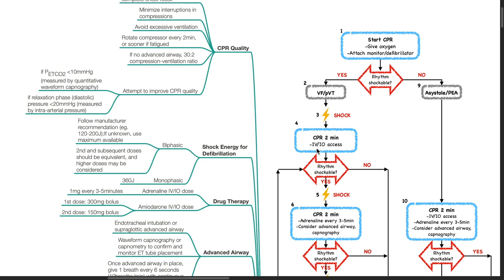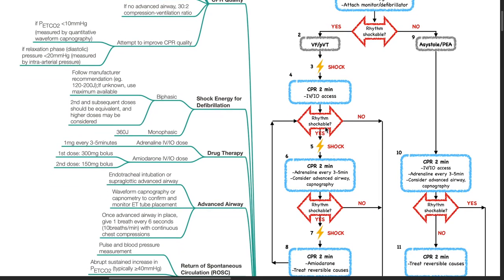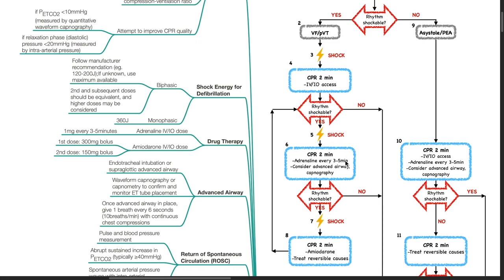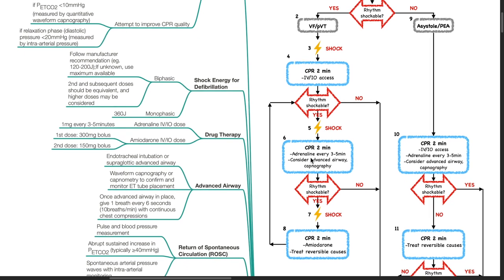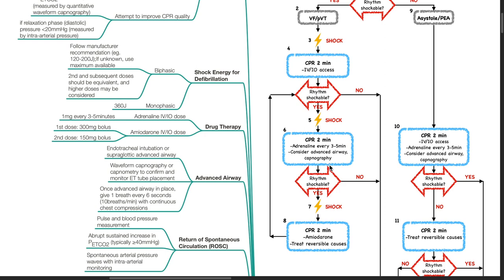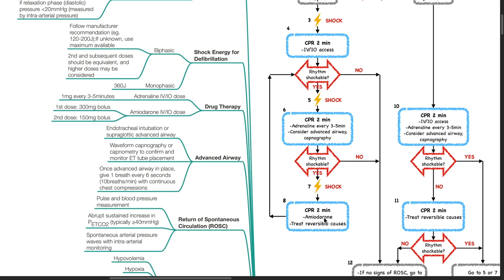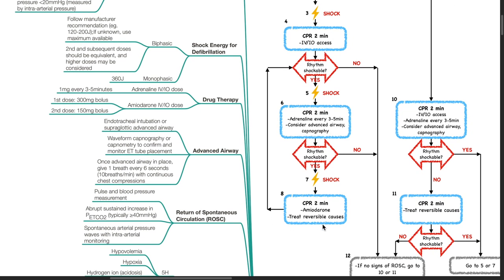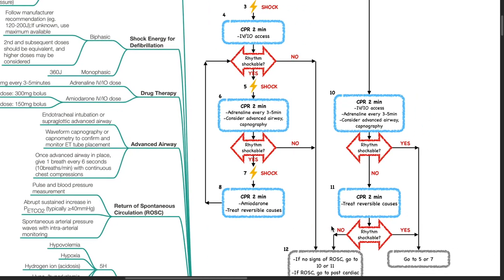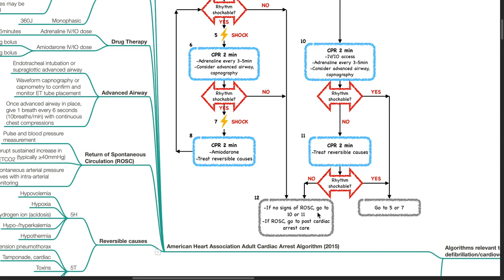After 2 minutes, assess again whether the rhythm is shockable. If shockable, provide the shock, then CPR for another 2 minutes. Give adrenaline every 3 to 5 minutes. Consider advanced airway and capnography. After CPR, if still shockable, provide shock, continue CPR for 2 minutes, give amiodarone, and treat reversible causes. If the rhythm is not shockable and there are no signs of ROSC, go to steps 10 or 11. If ROSC, go to post-cardiac arrest care.